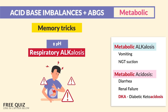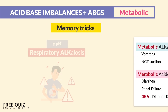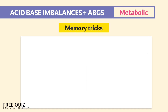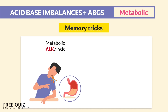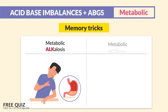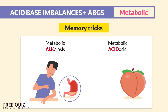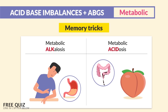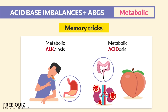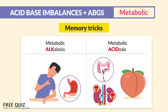Once again, the memory tricks: metabolic alkalosis — just think about vomiting. Metabolic acidosis — diarrhea, because you poop out base leaving you in acidosis; and renal failure, since the kidneys fail, acid prevails.